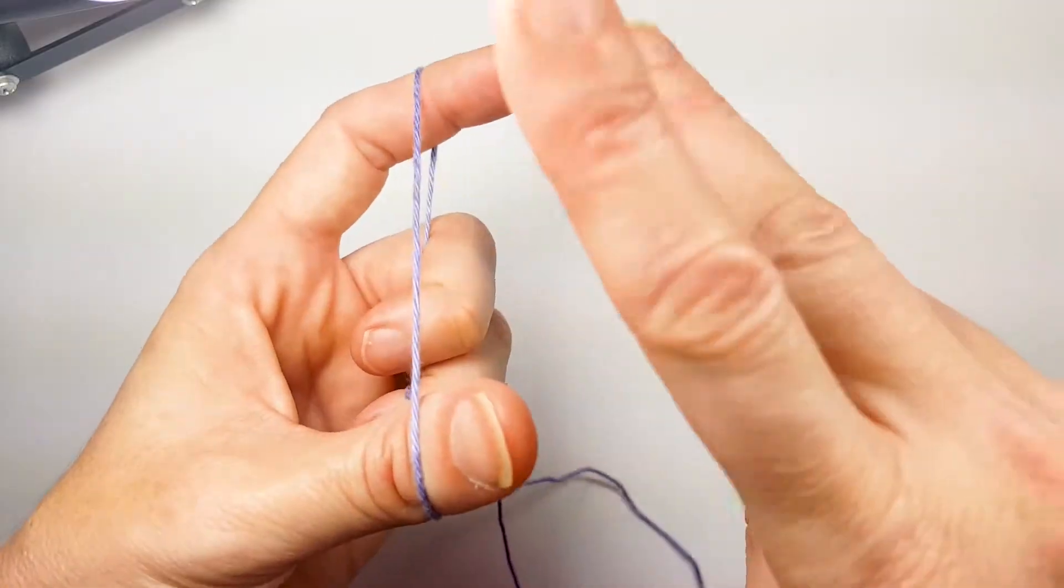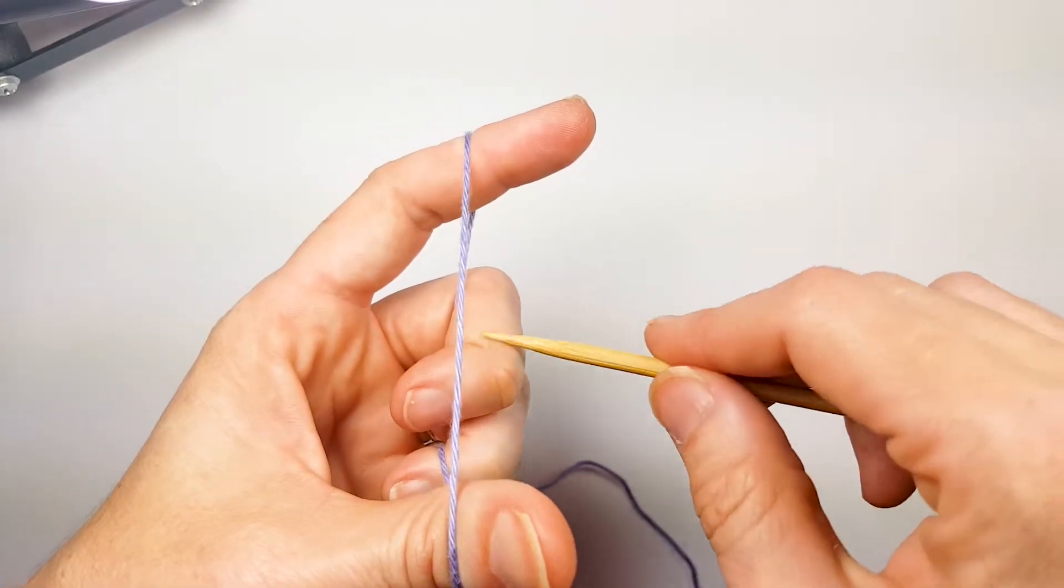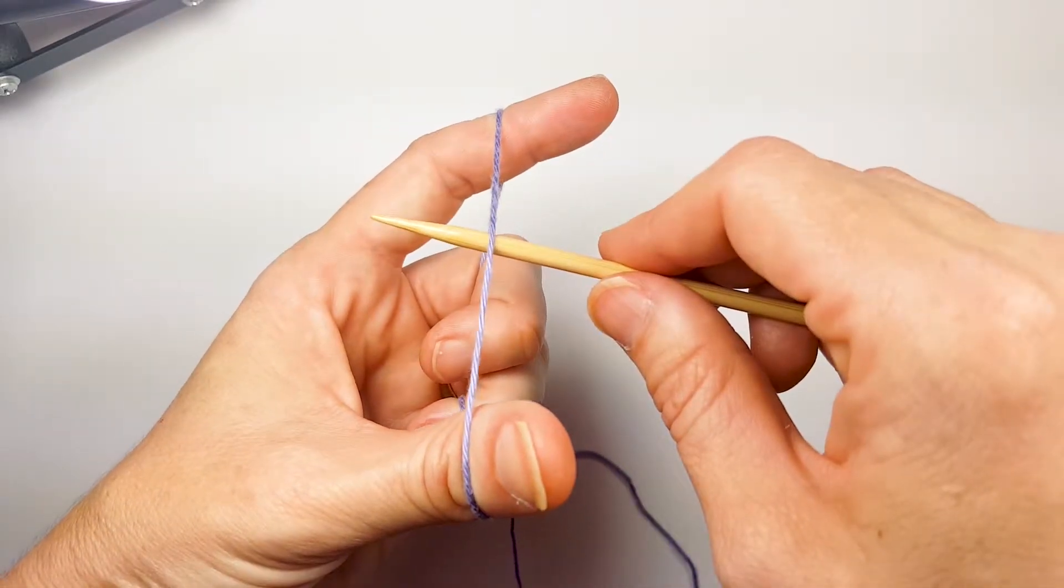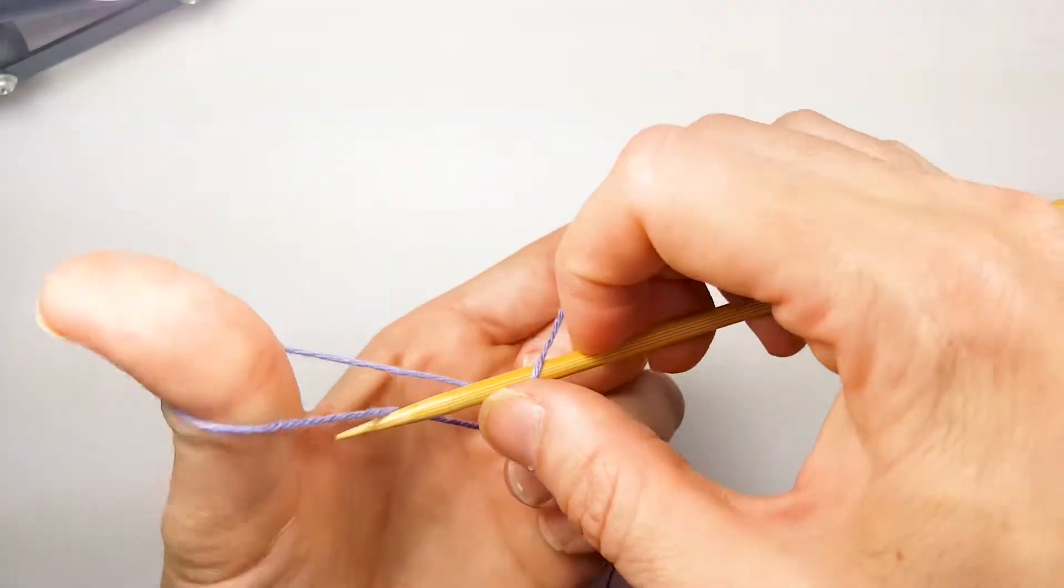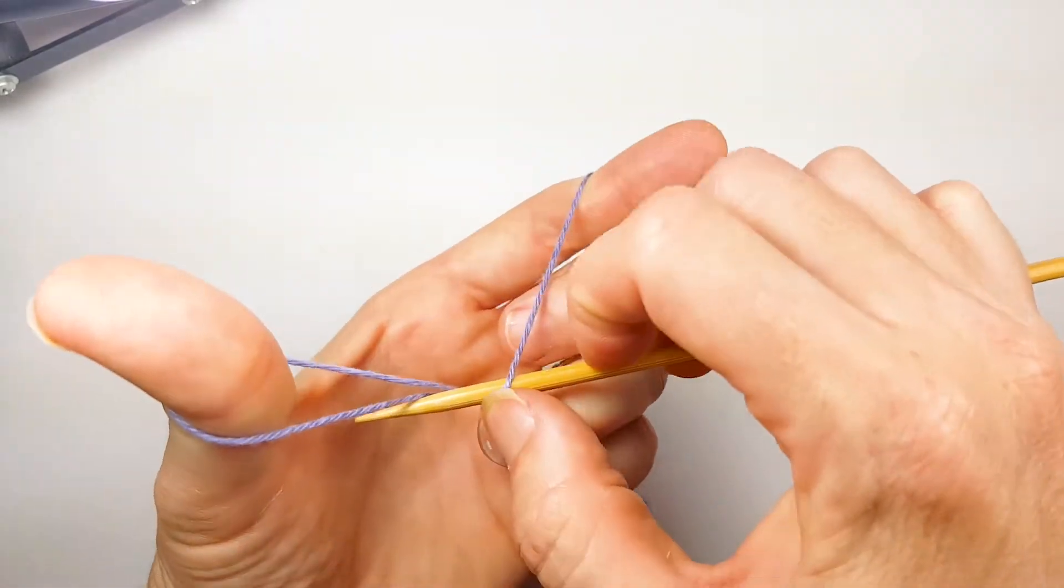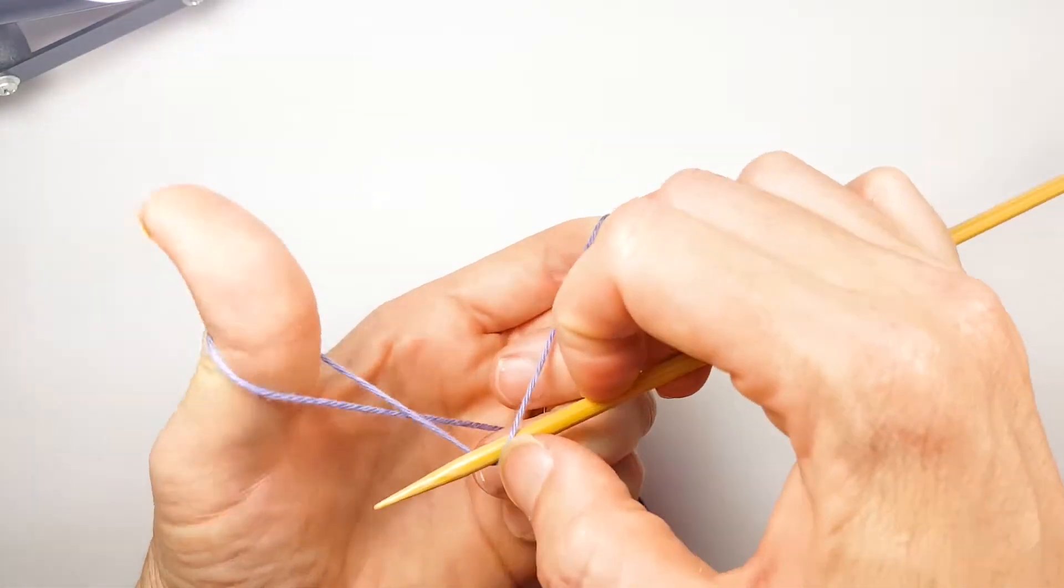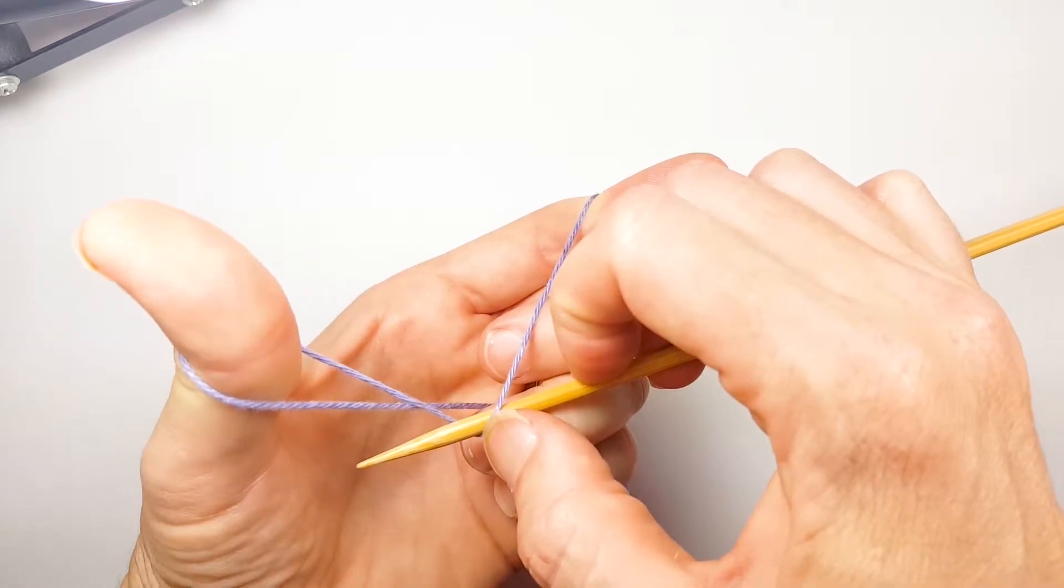So our first stitch is going to make two stitches. We're going to place our needle under the upright and then we're going to rotate it around the outside of the yarn. Do you see how that has made a loop around my thumb?